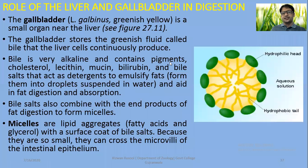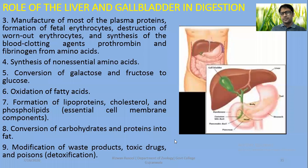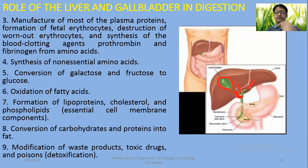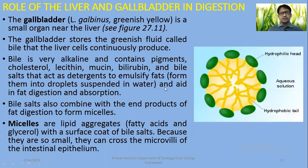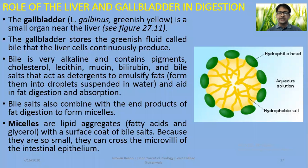Regarding the gallbladder — as you can see here — it is a structure associated with the liver. The liver has hepatic ducts, and the gallbladder connects via the cystic duct. The gallbladder stores bile, and bile is released upon proper stimulation into the small intestine for further functioning. The gallbladder is a small organ situated near the liver, greenish-yellow in color, and stores the greenish fluid called bile, which is produced continuously by liver cells.